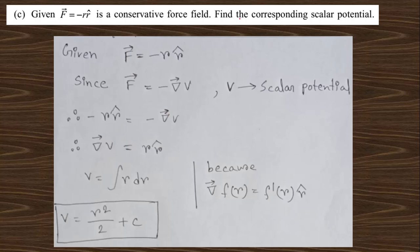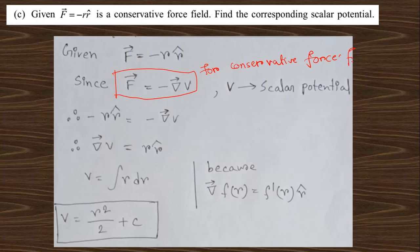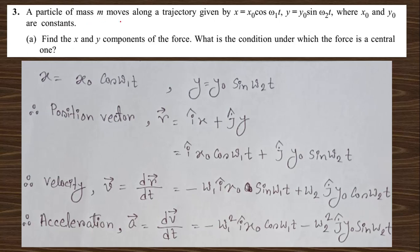Question 2c: Given F = −r r̂, find the corresponding scalar potential for this conservative force field. For a conservative force, F = −∇V. Using ∇f(r) = f′(r) r̂, we set −f′(r) = −r, so f′(r) = r. Integrating gives f(r) = r²/2. Therefore the scalar potential is V = r²/2.